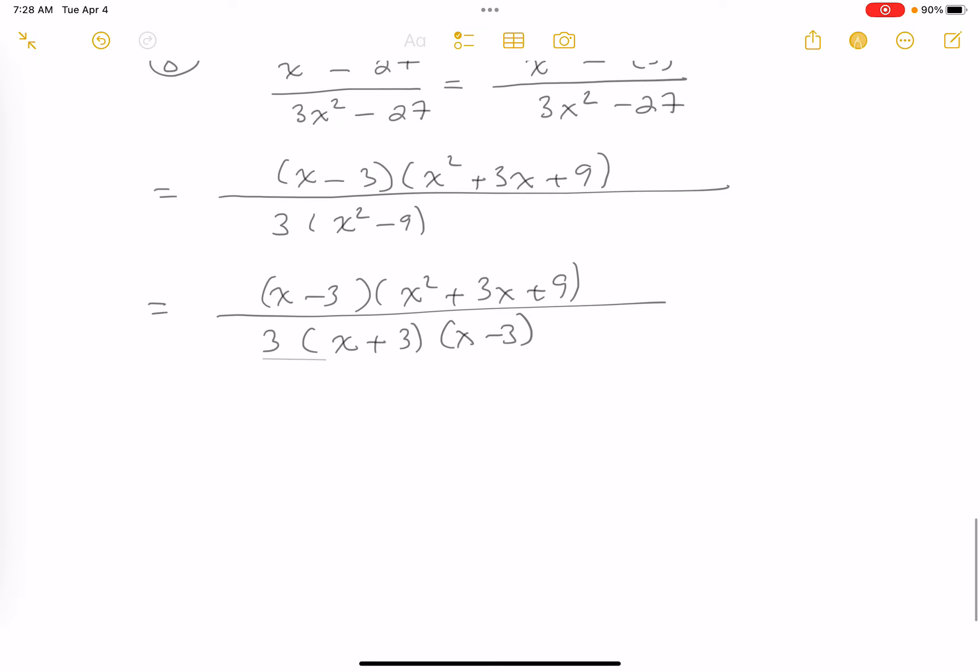Let's write the domain down. The domain is all real numbers. However, x cannot equal 3, and x cannot equal minus 3. Let's do a reduction. x minus 3 cancels from top and bottom.